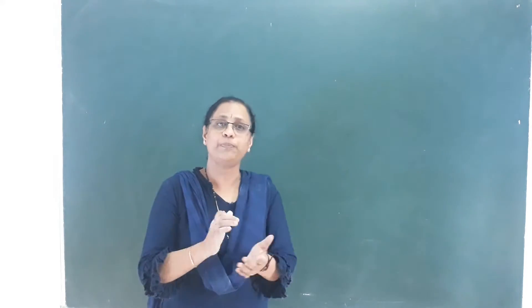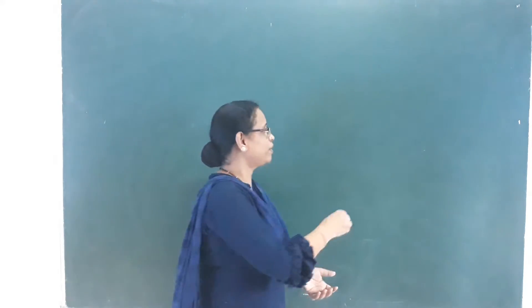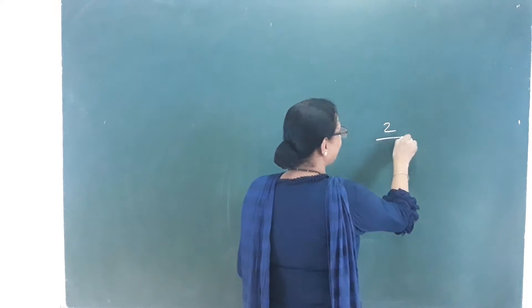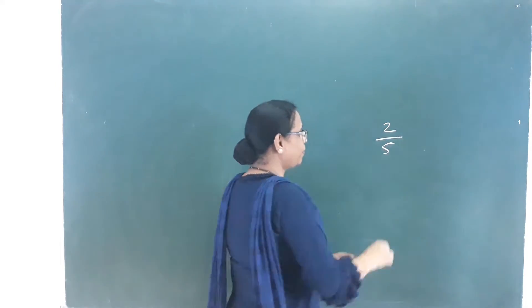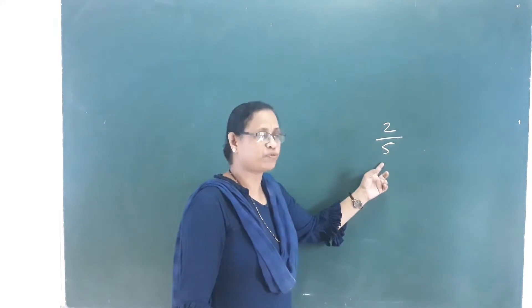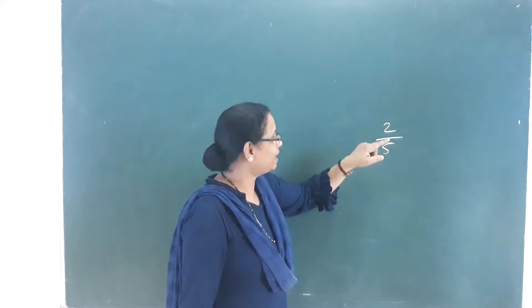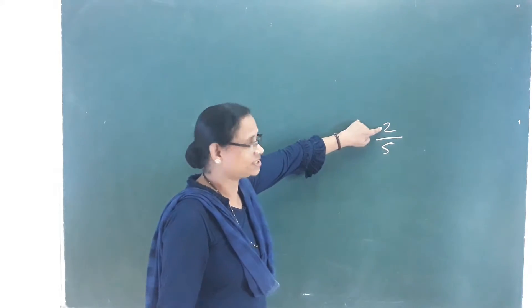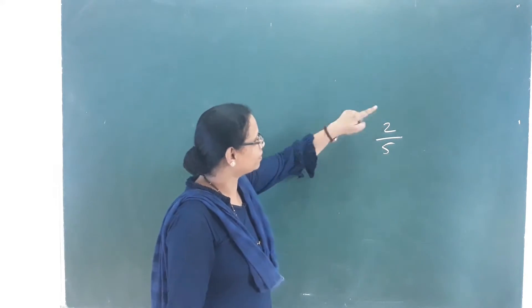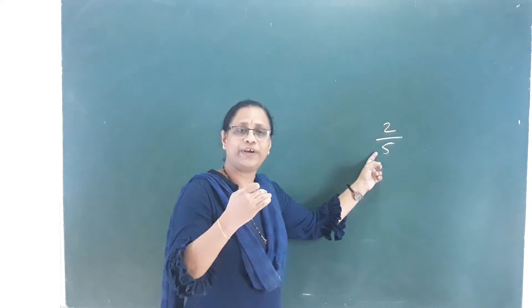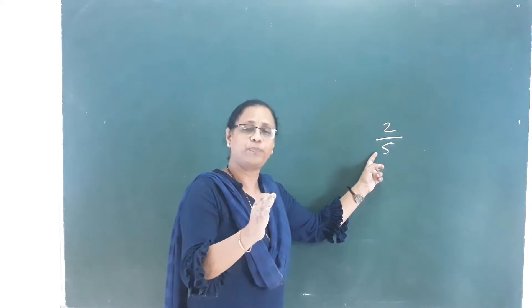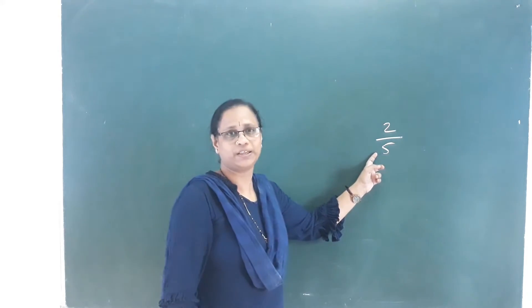What is a proper fraction? For example, 2 by 5. This is a proper fraction. Here the numerator is small. It's a proper fraction.